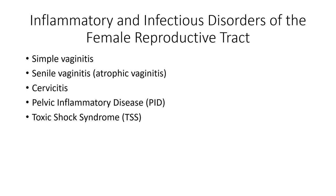TSS can also occur in non-menstruating women. Additional risk factors include recently giving birth, recent surgery, and internal medical packing placed into the vagina. Key points: the main culprit of TSS is Staph aureus; super-absorbent tampons and tampons left in place too long increase risk; and inserting tampons with fingers instead of an applicator also increases risk.